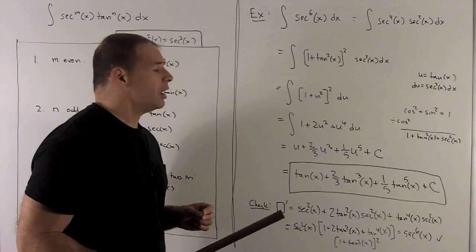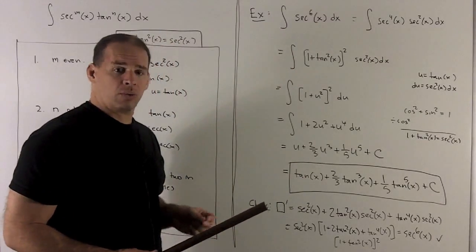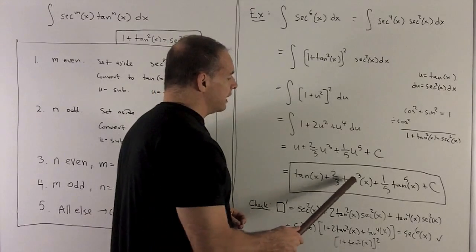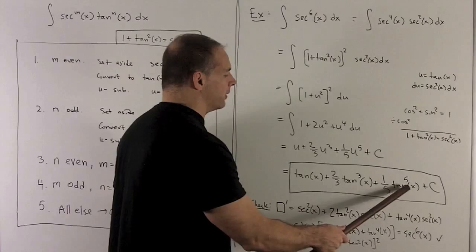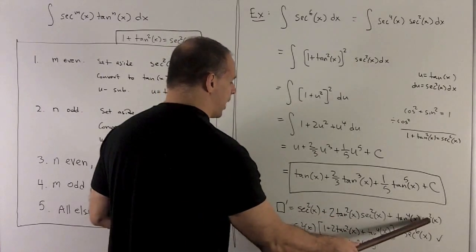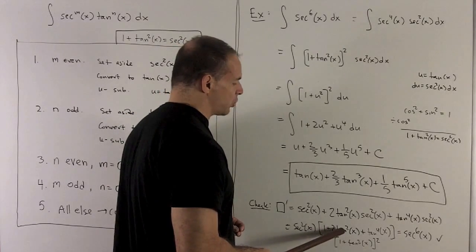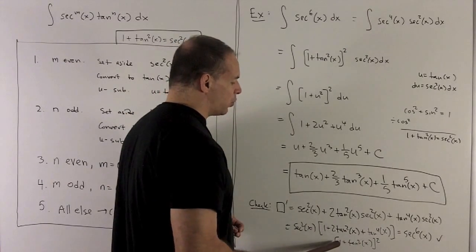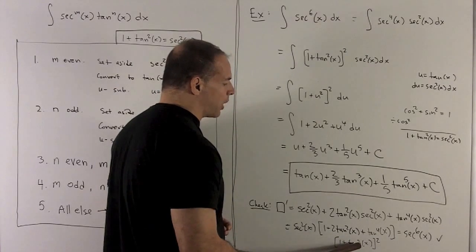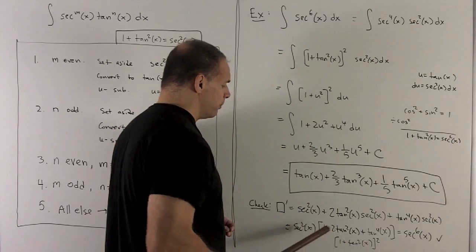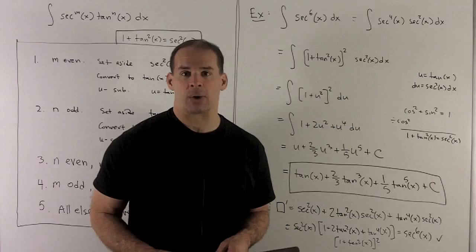We check by differentiating: taking the derivative of each term produces a sec²x from the chain rule, which factors out. What's left is 1 + 2tan²x + tan⁴x = (1 + tan²x)², and since 1 + tan²x = sec²x, that's sec⁴x times the factored sec²x, giving sec⁶x. The check works.